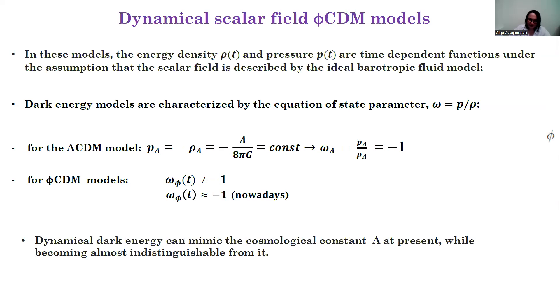In scalar field φCDM models, the energy density and pressure are time-dependent functions under the assumption that the scalar field is described by the ideal barotropic fluid model. Dark energy models are characterized by the equation of state parameter ω, which is the ratio of pressure to energy density. For the ΛCDM model, the equation of state parameter is constant and equals minus one. For φCDM models, the equation of state parameter is a time-dependent function. Dynamical dark energy can mimic the cosmological constant at present, while becoming almost indistinguishable from it.